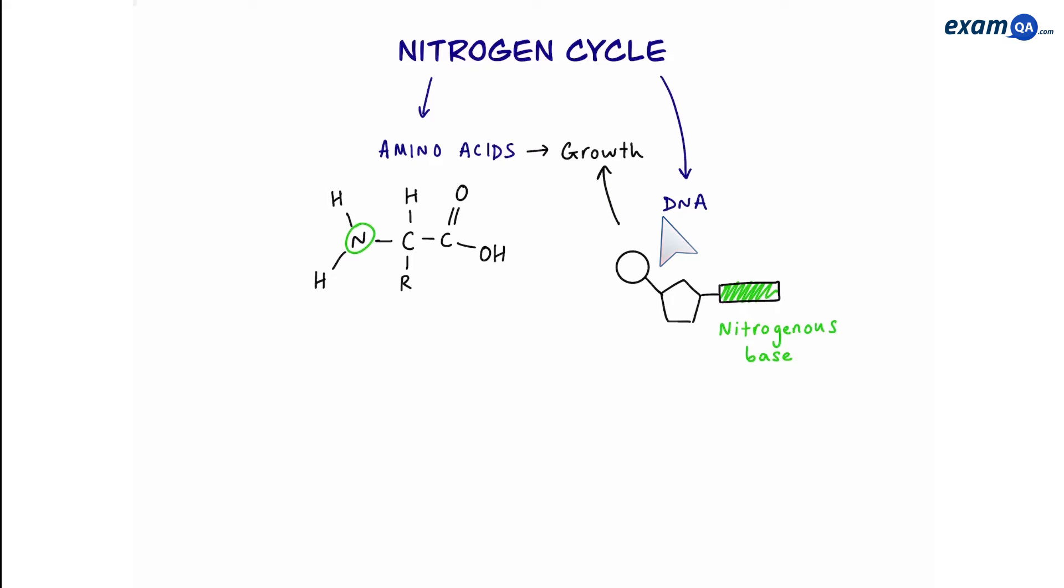Again, without DNA we can't make cells, and if we can't make cells we can't grow. Now around 78% of the air around us right now is nitrogen, however it's in its unusable form, N2. We're interested in converting it into nitrate ions so it can be used by plants.